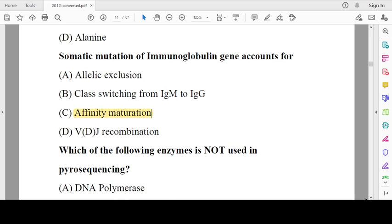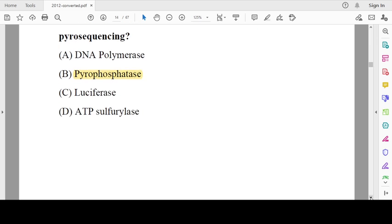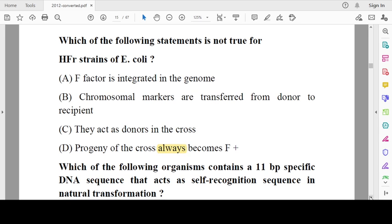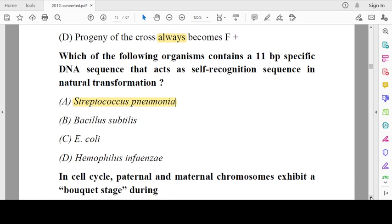Which enzyme is not used in pyrosequencing? Pyrophosphatase is not used in pyrosequencing, whereas DNA polymerase, luciferase, and ATP sulfurylase are used. Regarding F plasmids: they are integrated into the genome, correct; chromosomal markers are transferred from donor to recipient, correct; they act as donors in crosses, yes correct. The wrong option is the progeny of crosses always become F plus—no, that is wrong. Streptococcus pneumoniae contains an 11-base-pair specific DNA sequence that acts as a self-recognition sequence in natural transformation, used in Griffith's experiment.